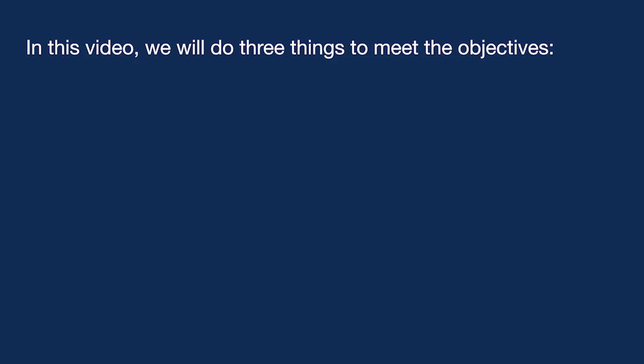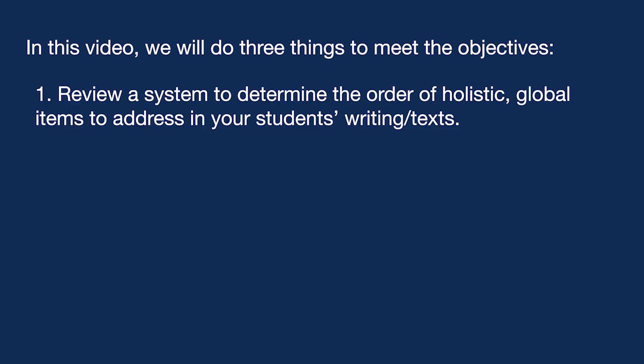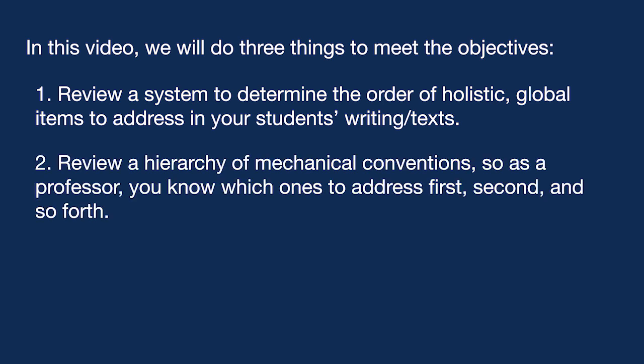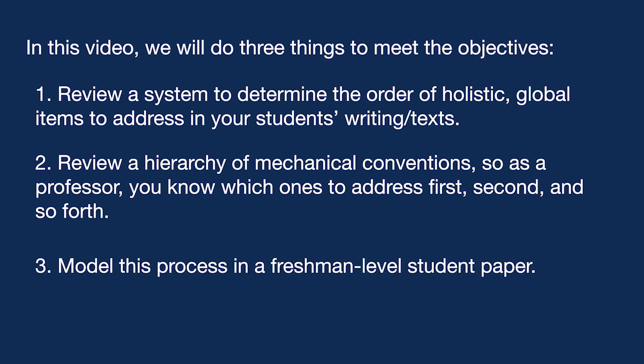In this video we'll do three things to meet the objectives. First, review a system to determine the order of holistic or global items to look for in student writing. Second, review a hierarchy of mechanical conventions so you know which three or four mechanical errors to focus on per class level — whether undergraduates or graduate students. Third, model this process with a freshman-level paper.